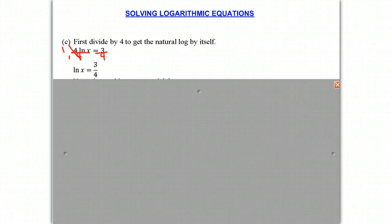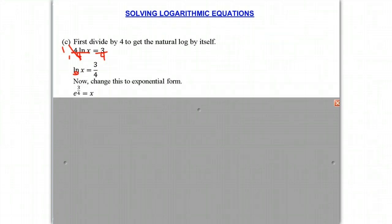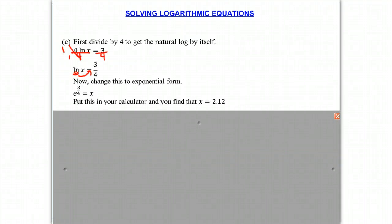And according to our definition of logs, since this is a base e, it should mean that e to the 3 fourths power is equal to x. And that's what we have right here. So e raised to that number, 3 fourths, is equal to x. And now we just put this in our calculator. We calculate the answer, and there it is: x is equal to 2.12.